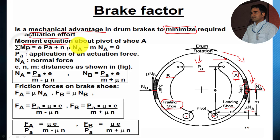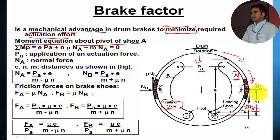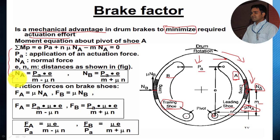We are considering the moment about the pivot of shoe A. So about the pivot point, taking moments for shoe A: e times Pa — the actuation force times its perpendicular distance from the pivot point e — is in the clockwise direction, considered positive. Mu times Na, the friction force, multiplied by n, its perpendicular distance from the pivot point, and the normal reaction Na which produces a counterclockwise moment with perpendicular distance m from the pivot point — giving minus m times Na. The sum of moments must equal zero.